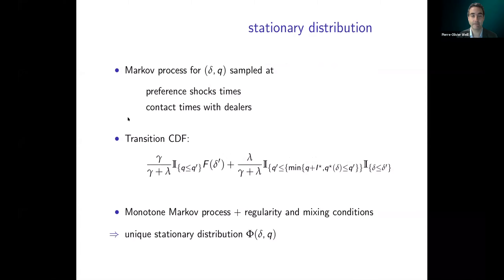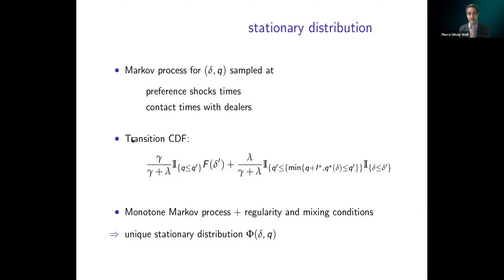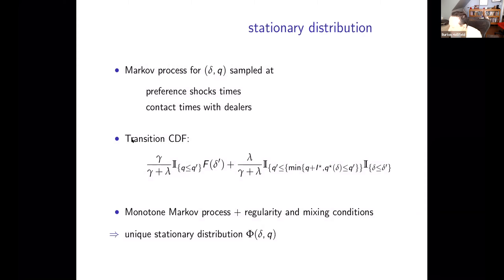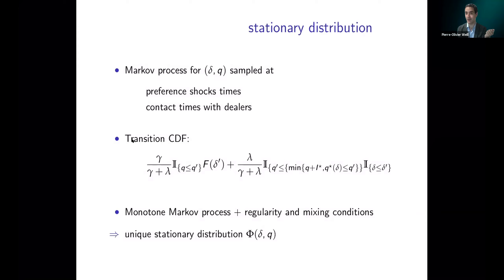A question about the frequency at which dealers access the inter-dealer market: dealers have continuous access, except they cannot access it when meeting a customer — that's what drives the entire model. One way to think of this is as the limit of a model with two Poisson processes — one for contacting customers and one for contacting dealers — where the speed of dealer contact goes to infinity. Even in that limit, you're never able to contact dealers at the same time as customers, so you're forced to hold inventories to trade with customers and then quickly replenish afterward.